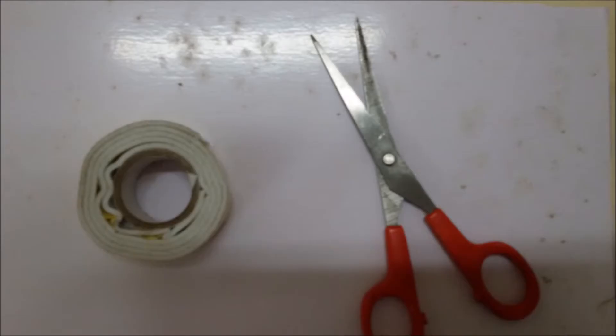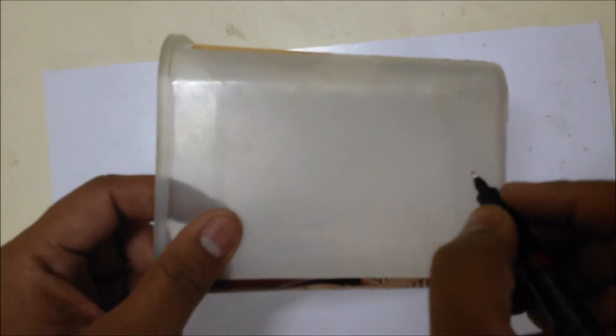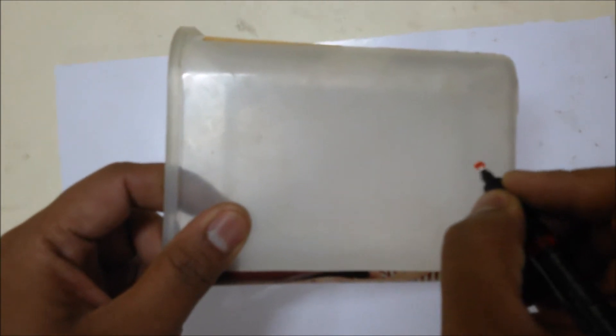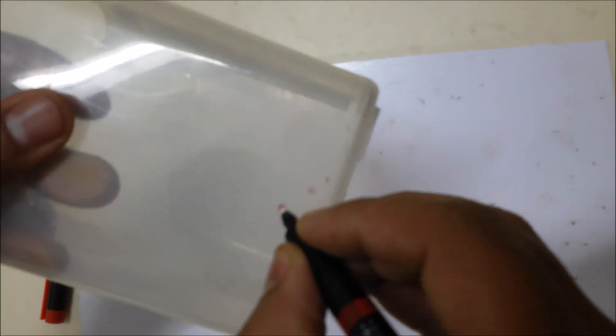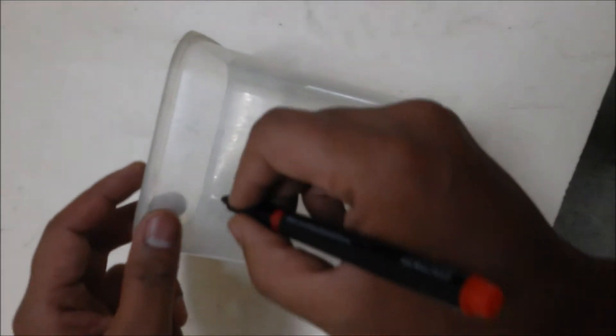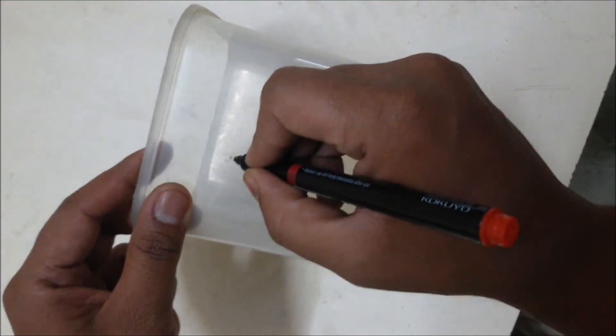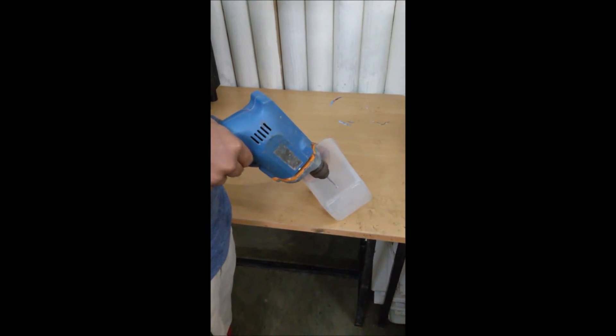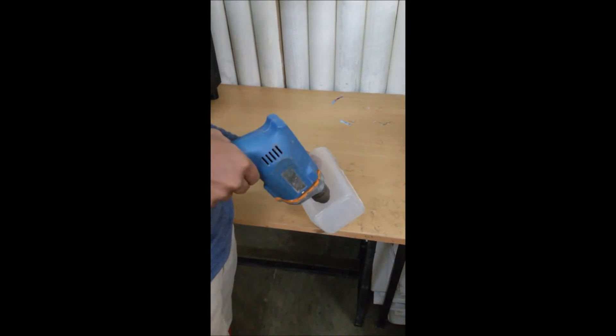Now mark all the spots required for connection of DC motors using a permanent marker from left and right, both sides of the box. Mark one spot on the front of the box for the switch as per measurement of the switch, and drill all three spots on the box.